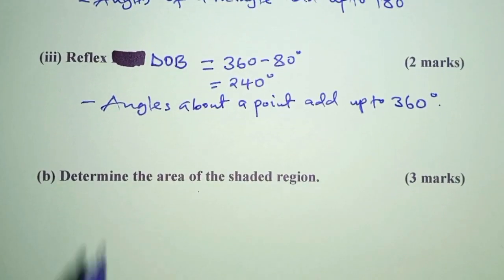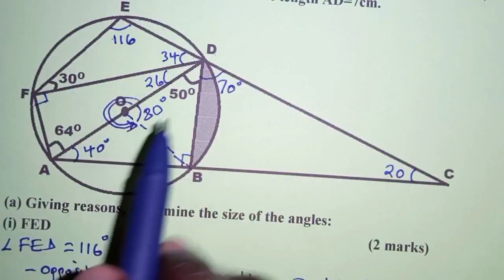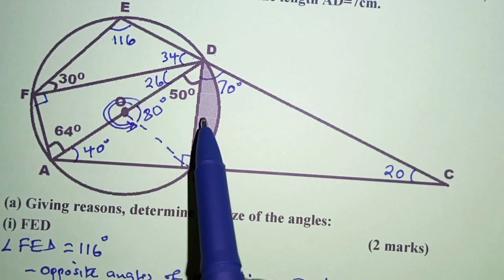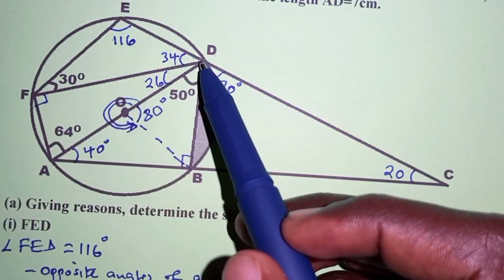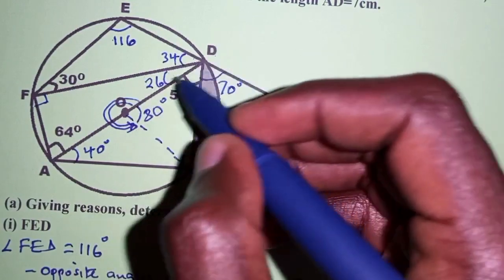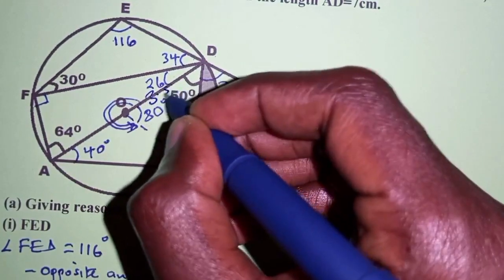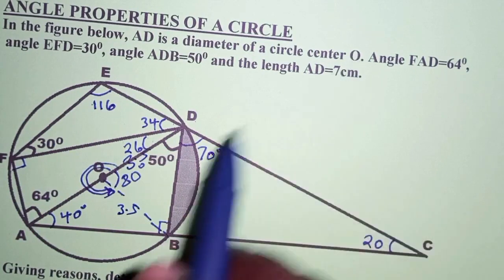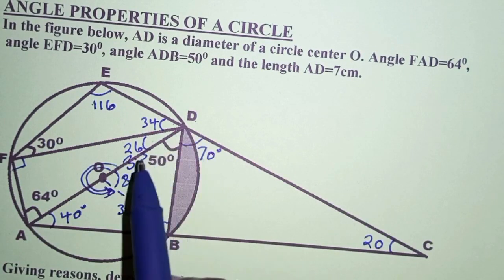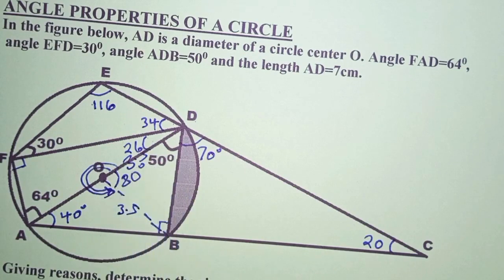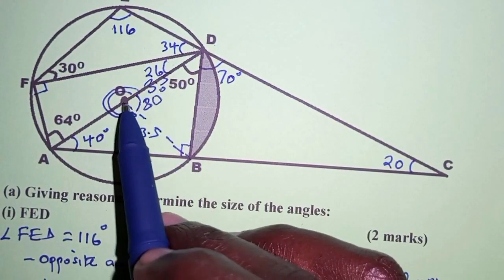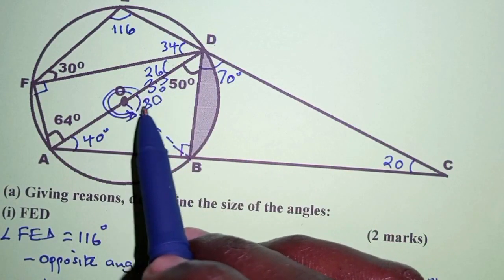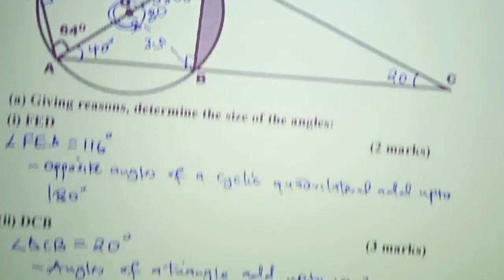Now let's look at the last part: determine the area of the shaded region. The radius OD and OB are each 3.5 centimeters, since AD is 7 centimeters and the radius is half the diameter. We consider sector ODB with the angle subtended at the center as 80 degrees. The shaded region is a segment, obtained as area of the sector minus area of the triangle.